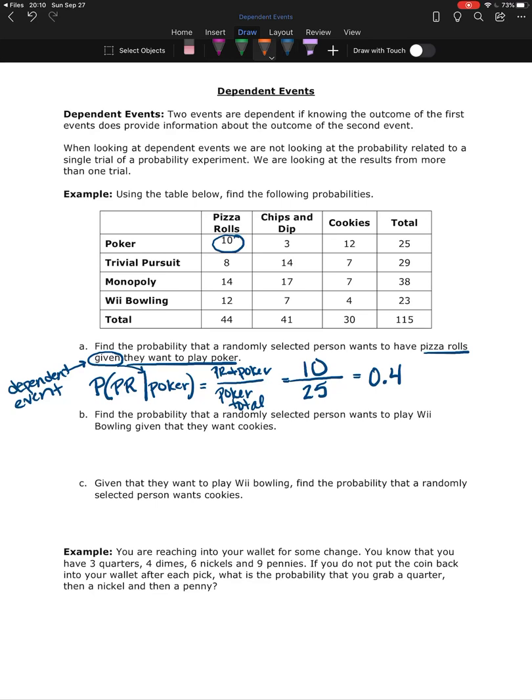Let's do another. Find the probability that a randomly selected person wants to play Wii Bowling given that they want cookies. So whatever follows this word given, first of all given says okay I've got dependent events here, whatever comes after the word given that becomes the group that I care about. You can also think of it as okay I'm in a room with these people. I have 115 people in the room. First I'm going to ask the people to stand that said they wanted cookies. So I'm in this room and I say okay if you wanted cookies please stand up. However many people stand up, that's what goes in the bottom. So 30 people stand up.